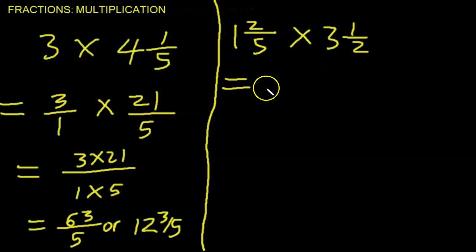So 5 ones, 5 and 2 sevenths. So the 1 and 2 fifths convert it to 7 over 5. And we can convert the 3 and a half to 2 times 3, 6. 6 and 1, 7. So convert it to 7 over 2.